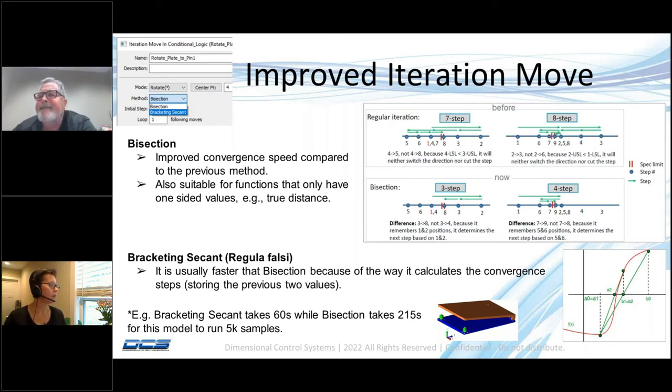If you recall, the iteration move had a mode but never had a method. For this release, we called the old iteration move bisection, and we improved that one by making it faster. We improved its convergence speed.